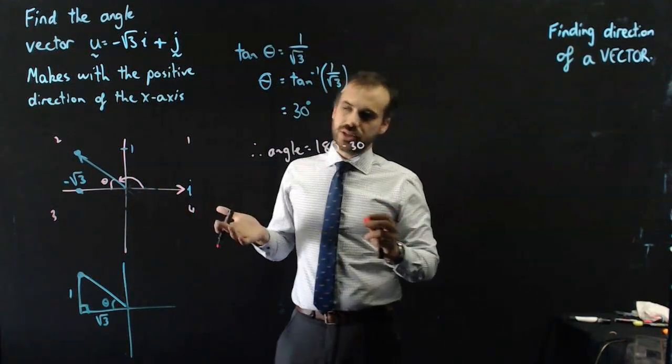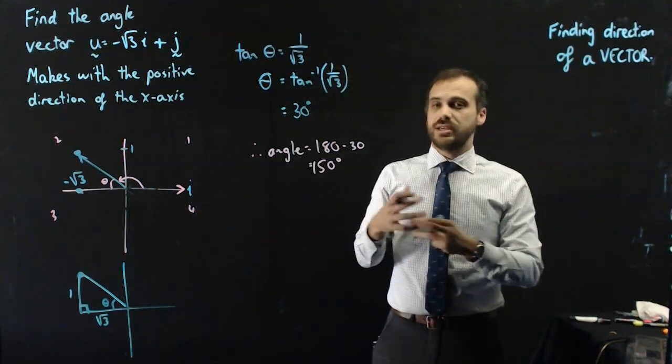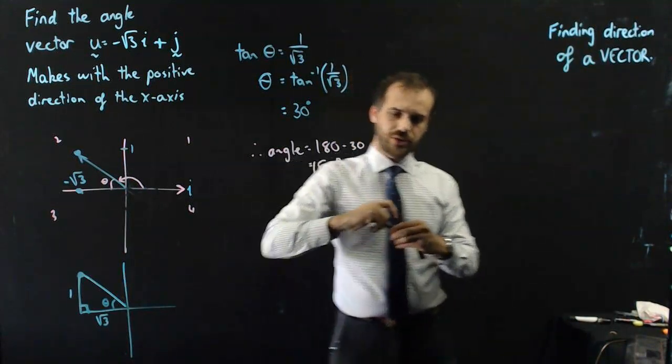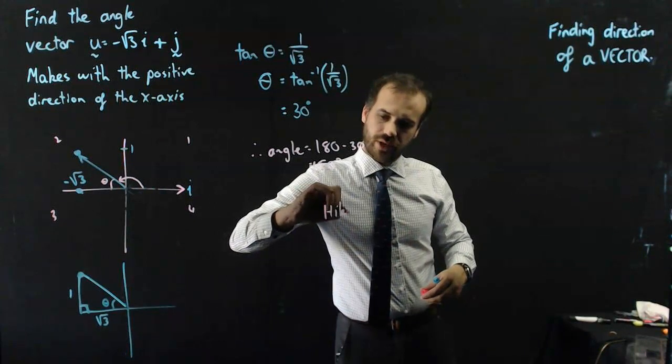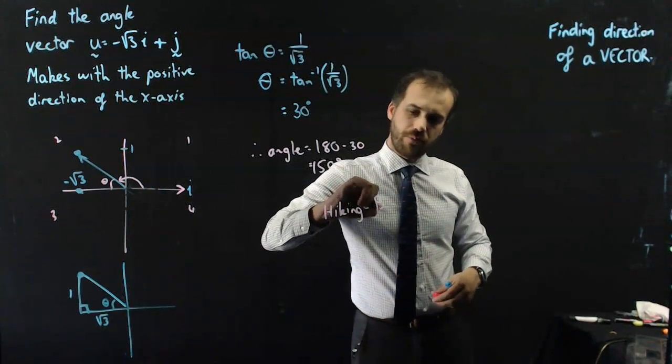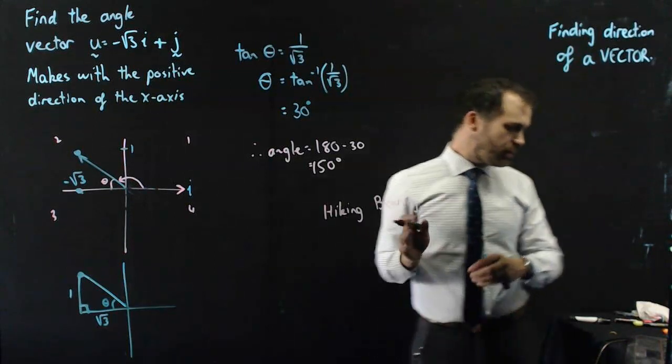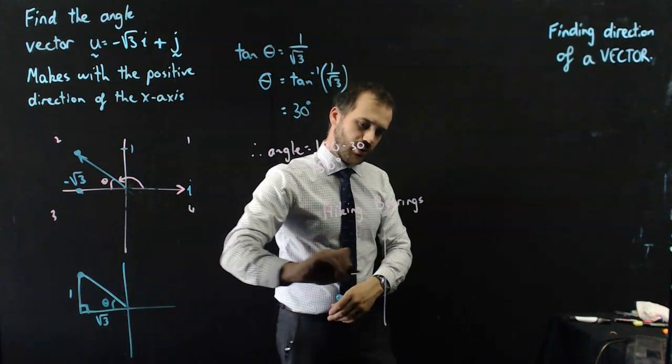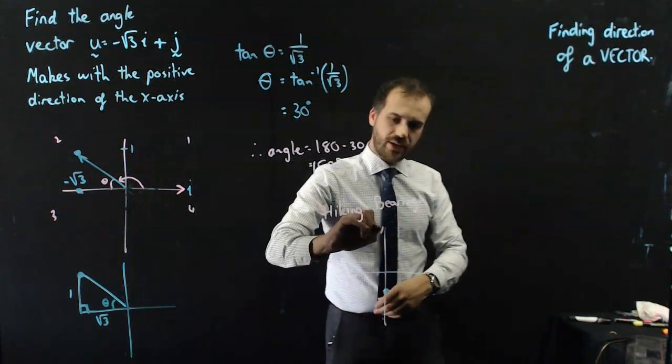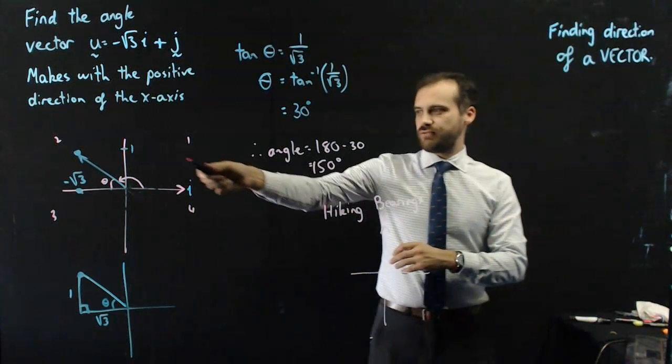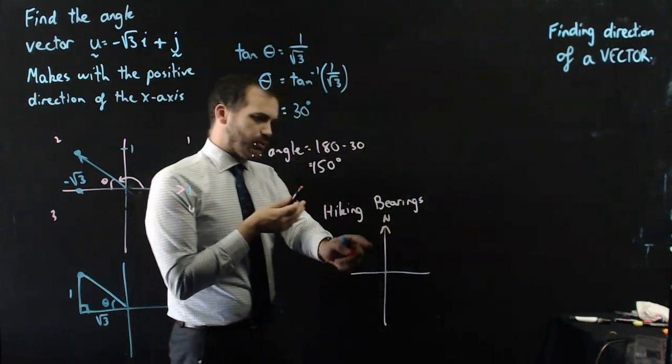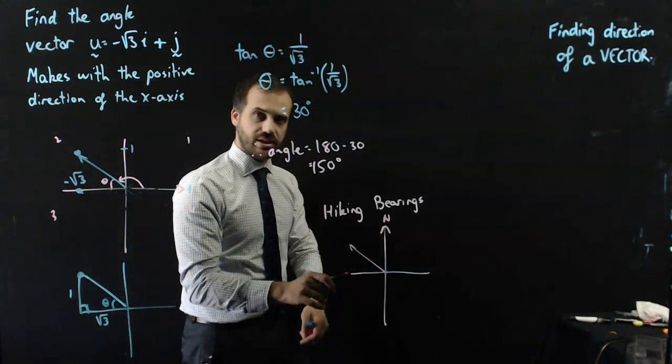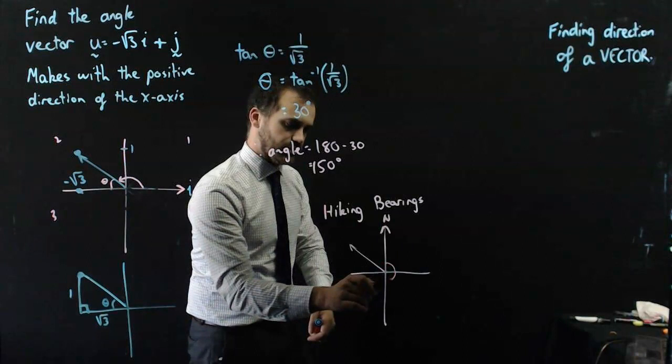Now, there is a variation on this question. If you're doing questions about hiking and things like that, then they might want the bearing. They might actually want, if it's like a hiking question or a bearings question, they might not want the angle from the positive direction of the x-axis. They might want the angle from north. So, if this was a question where it was a hiking question and they wanted the angles from north, this was my vector, so it would be this angle here.